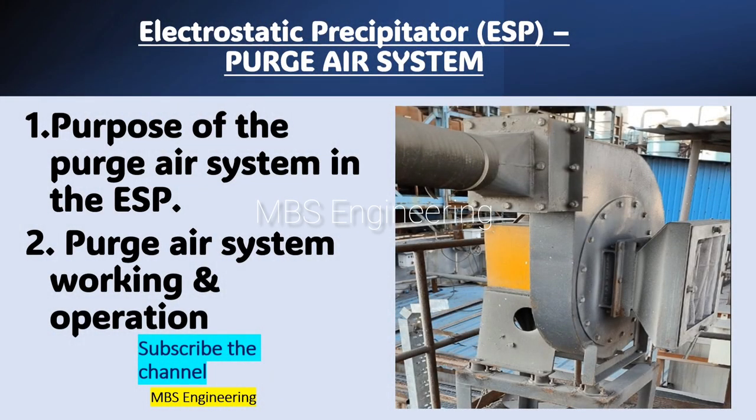Welcome to our channel. First, we understand the purpose of the electrostatic precipitator (ESP). An electrostatic precipitator is defined as a filtration device that is used to remove fine particles like smoke and fine dust from flowing gas. It is the most commonly used device for air pollution control. An ESP removes particles from a gas stream by using electrical energy to charge particles either positively or negatively.